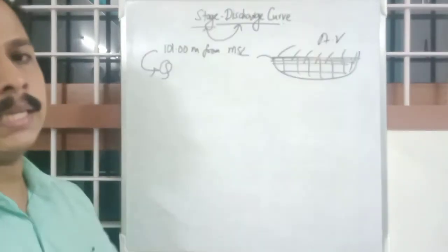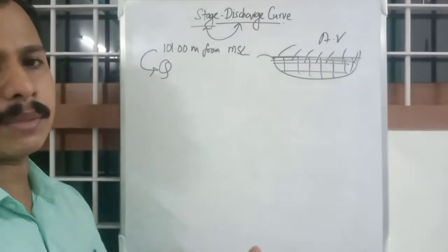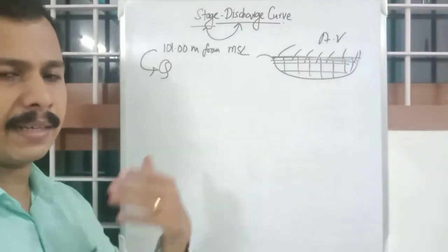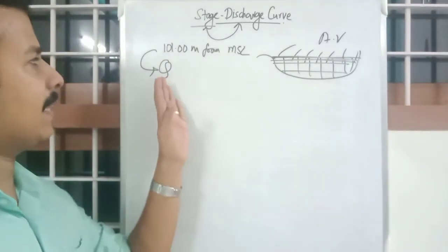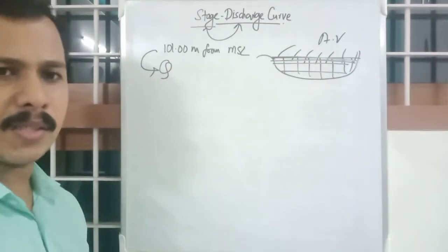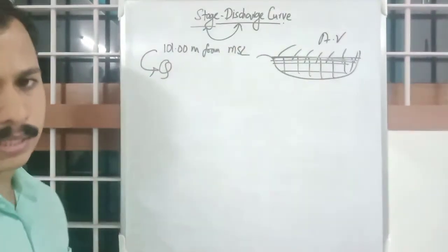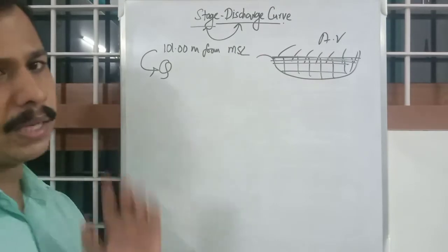There is no need to do area velocity method or any other method dilution method or any other method repeatedly and spending the time you can hardly take the value. Of course there will be errors but it will be an easier method. So I hope the concept is clear.